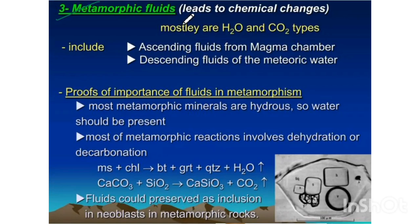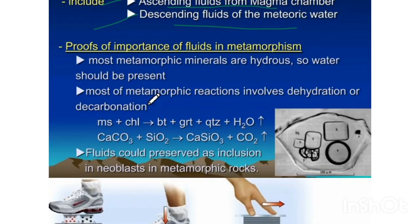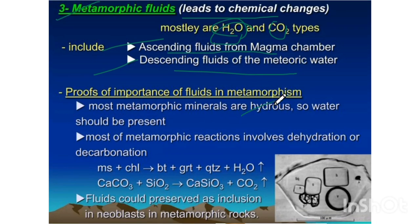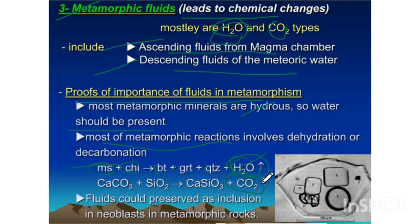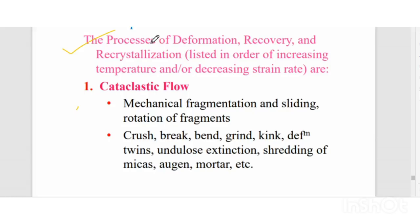Metamorphic fluids are generally responsible for chemical changes, mostly due to water or CO₂ — from ascending fluids from magma or descending meteoric water. Proof of fluid importance is that most metamorphic minerals are hydrous. Most metamorphic reactions involve dehydration or decarbonation. For example, muscovite reacts with chlorite to produce biotite, garnet, quartz, and water — that is dehydration. Fluids can also be preserved as inclusions in metamorphic rocks.